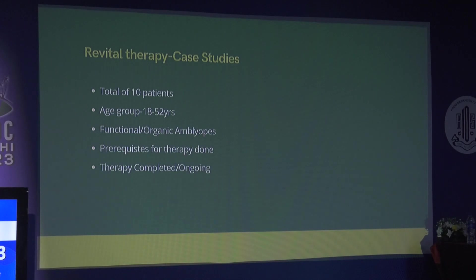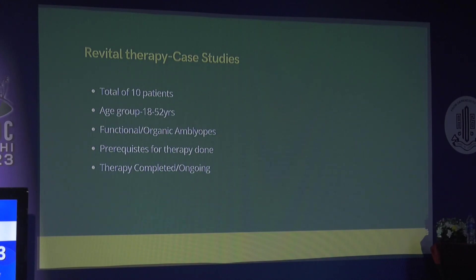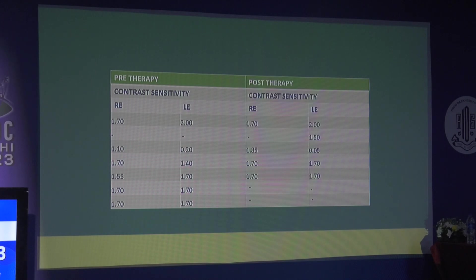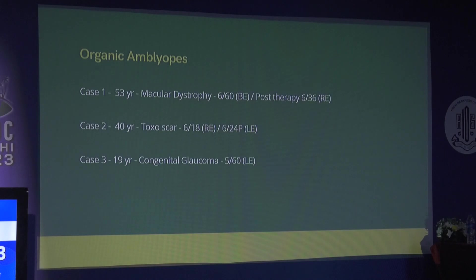I conducted a case study with 10 patients aged 18 to 52, most of whom were functional amblyopes, with three organic amblyopes included. Pre-requisites for therapy were completed; some finished the full course and some are ongoing. Revital Vision recommends a minimum of 40 sessions within three months, which can be customized. Visual acuity was assessed with Snellen and LogMAR, stereopsis with the TNO test at near, and contrast sensitivity using the Pelli-Robson chart.